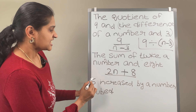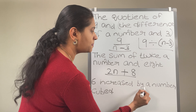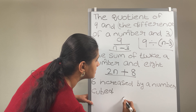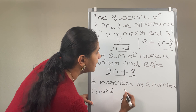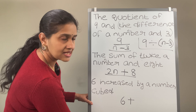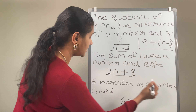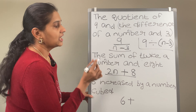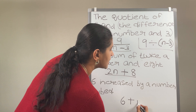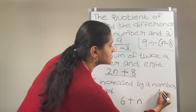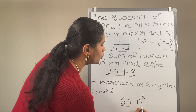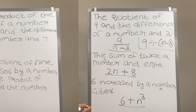Now next is 6 increased by a number cubed. 6 increased means 6, and increased means add. 6 plus a number cubed — number cubed means consider n as the number, n cubed. So that is 6 plus n cubed.